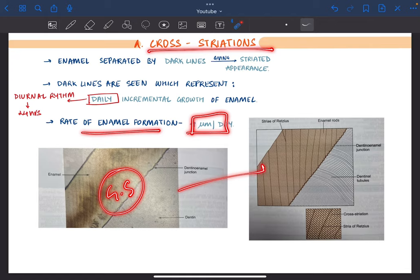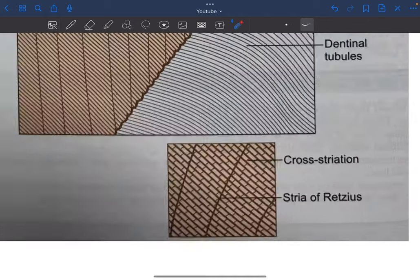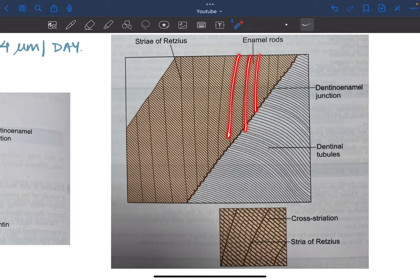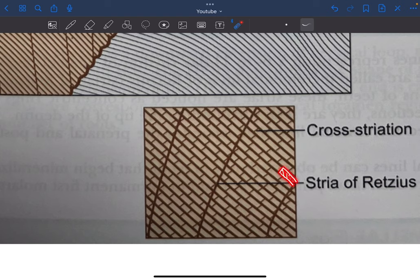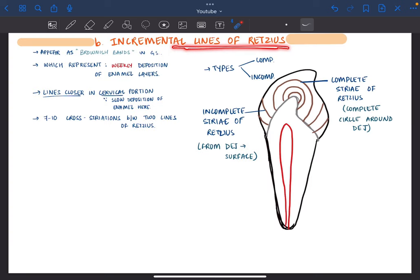This is the ground section and diagrammatic representation. Here we can see the cross-striations. These cross-striations represent 24 hours of deposition. The next 24 hours, this amount was deposited, and so on.